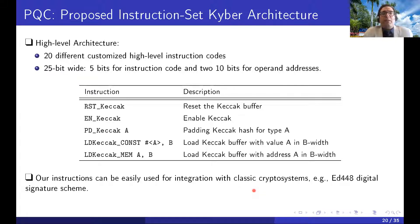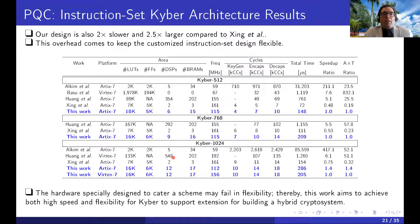We also reduce NTT complexity by merging the preprocessing step into NTT layers and using a ping-pong memory addressing strategy. In the high-level architecture, we define 20 different customized high-level instruction codes, each with 25 bits including 5 bits for the instruction code and two operand addresses. These instruction codes for SHAKE can be easily used for integrating other cryptosystems such as ED448, enabling a hybrid cryptosystem. Our results show we can outperform most previous works, though we incur some overhead to maintain flexibility and high speed compared to dedicated designs for high-performance or lightweight compact applications.